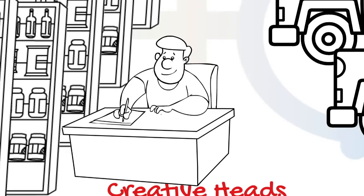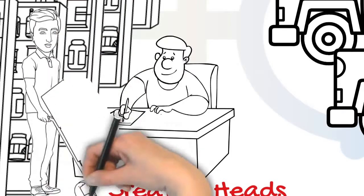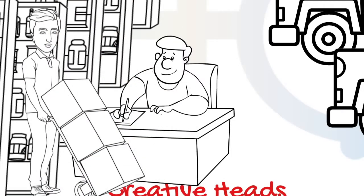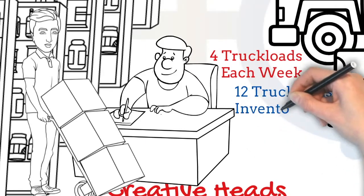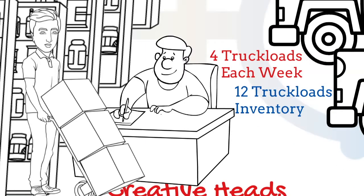Like the retailer, the distributor too used a form to place his orders and give it to his trucker. The distributor was receiving orders in terms of truckloads, to keep it simple, the distributor was also placing 4 truckloads of order each week and used to keep 12 truckloads in the inventory, as he knew he would receive his order after 4 weeks from the brewery.